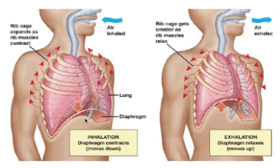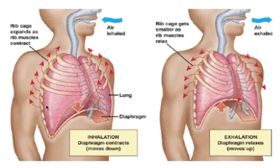The diaphragm contracts and moves down. You can see here it's in its relaxed position, but here it's trying to flatten. It moves downwards, and because it's all connected with connective tissue, it pulls the thoracic cavity downwards and stretches the lungs downwards. At the same time, muscles in between each of the ribs — called intercostal muscles — contract and pull the ribs together, pulling the whole rib cage upwards and outwards.